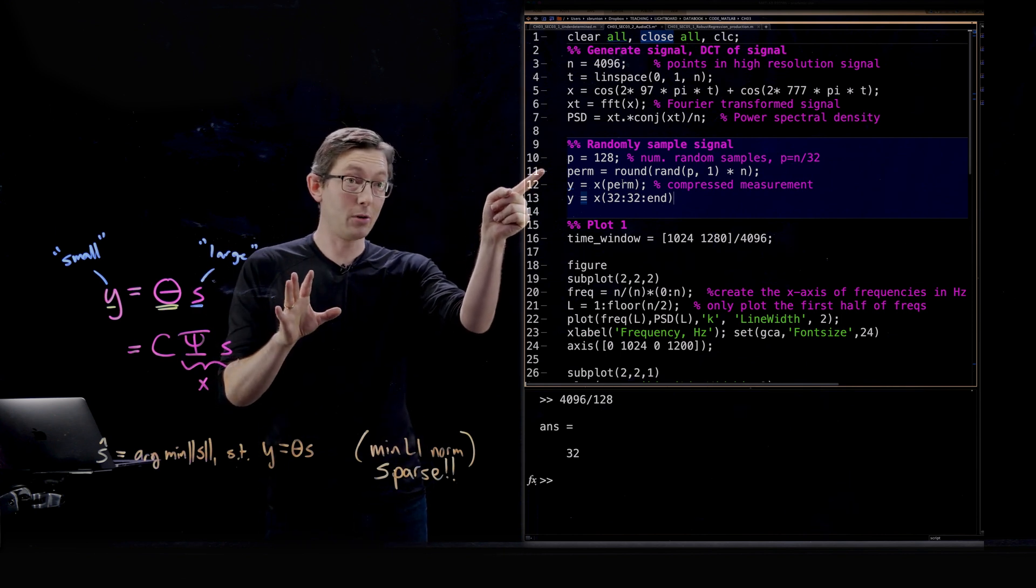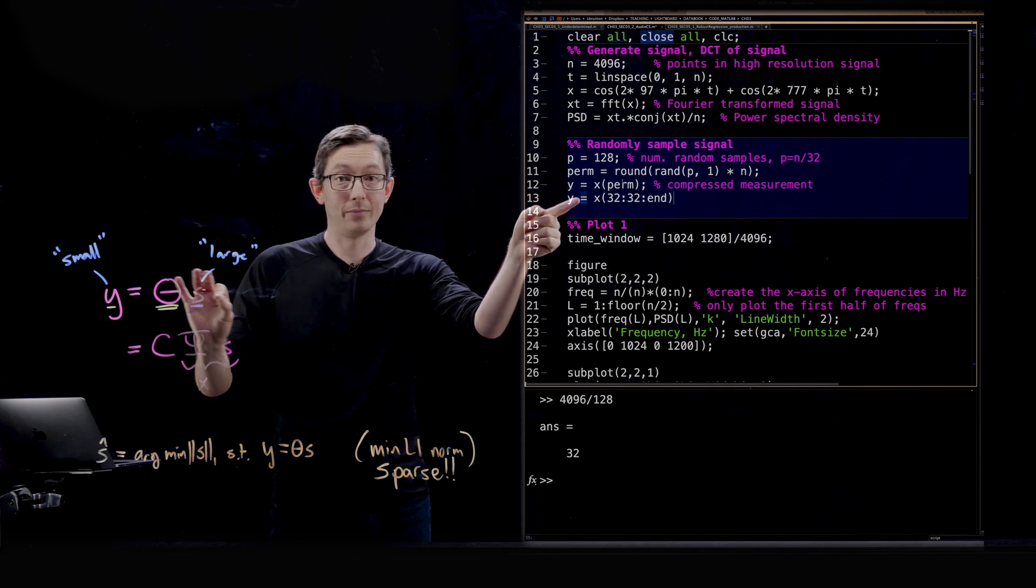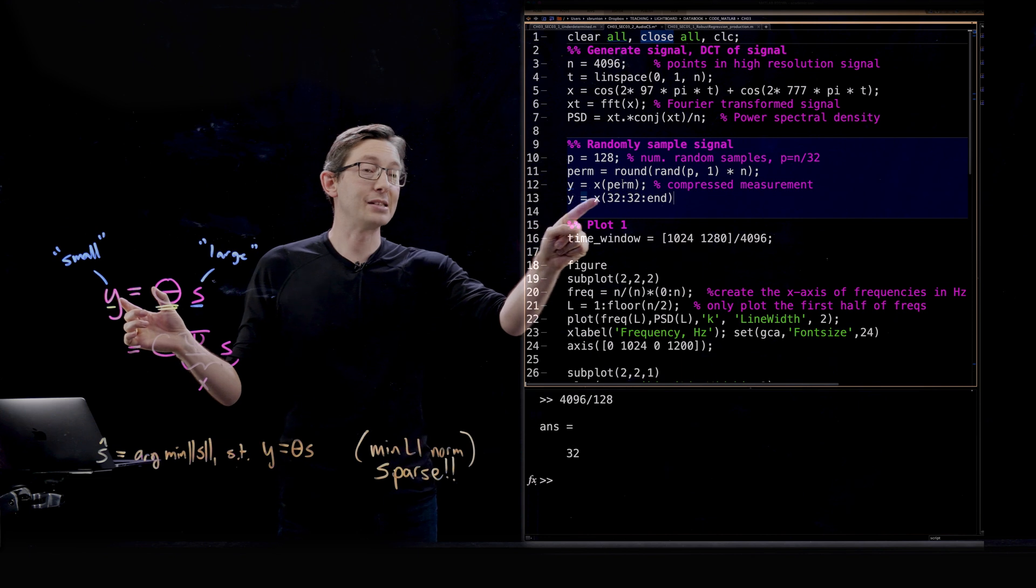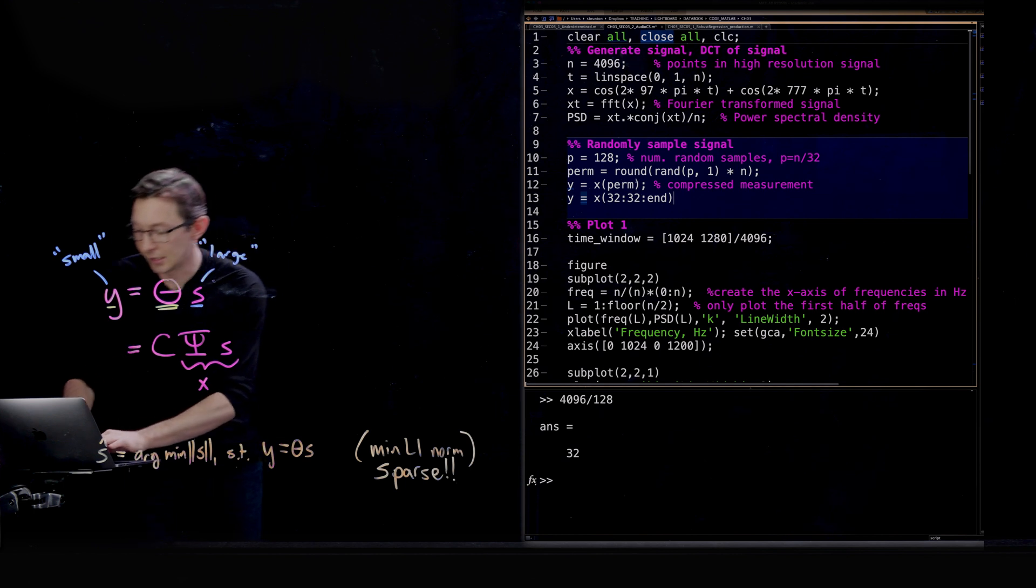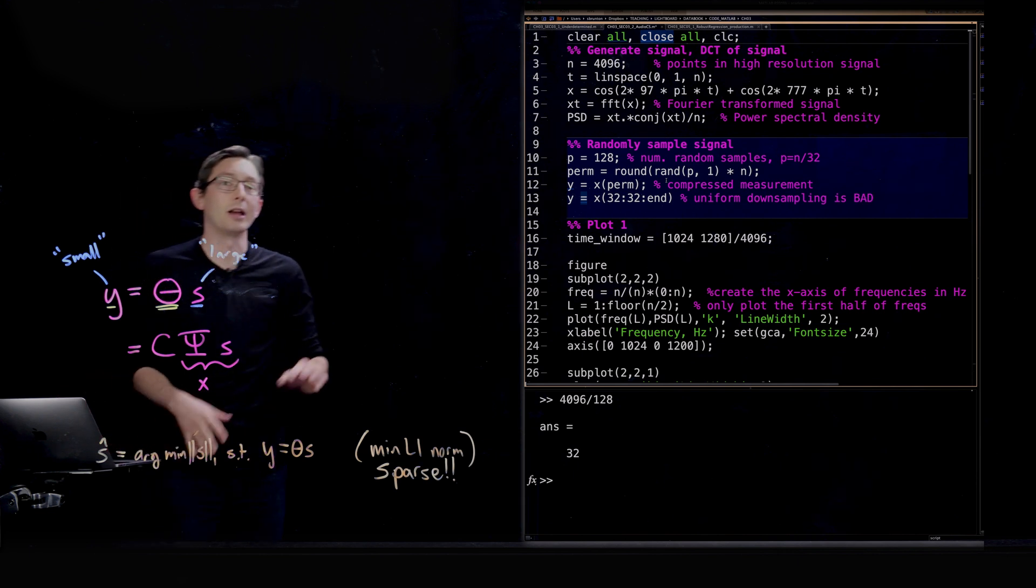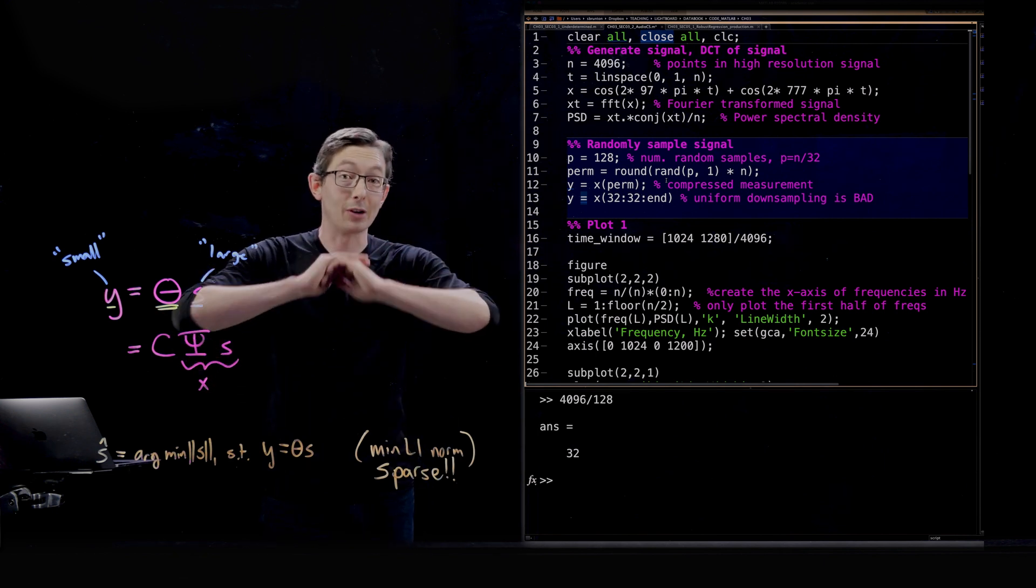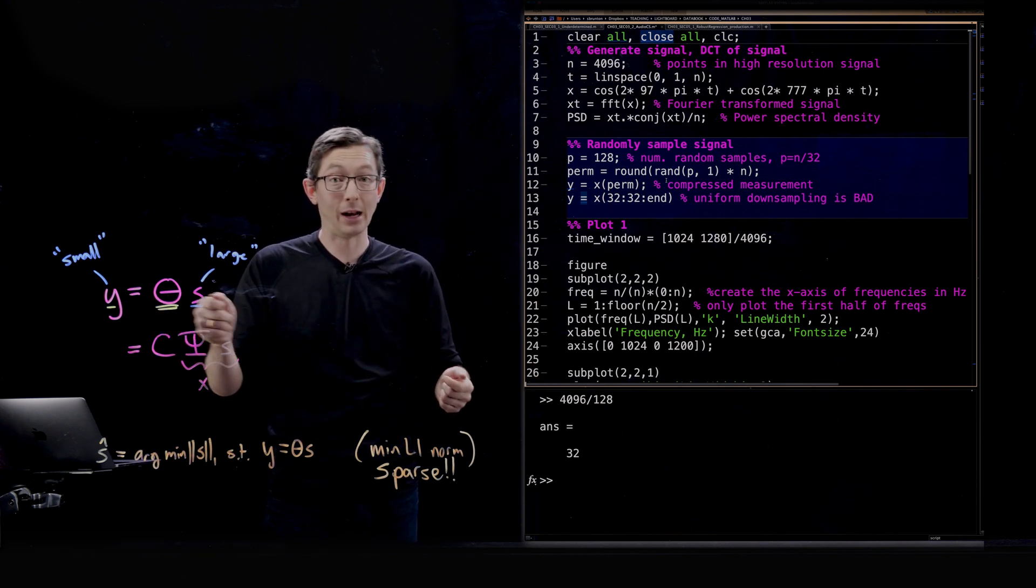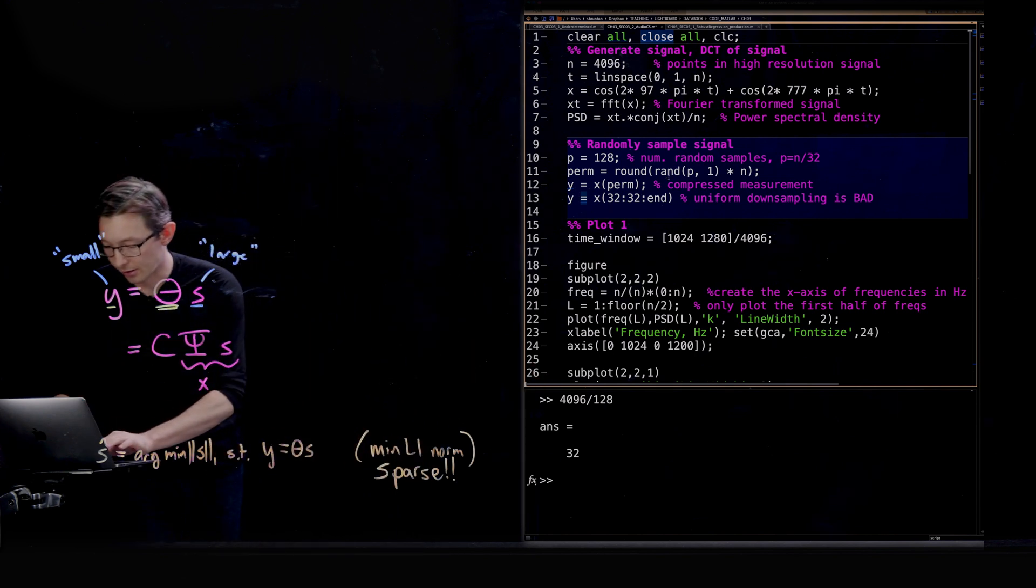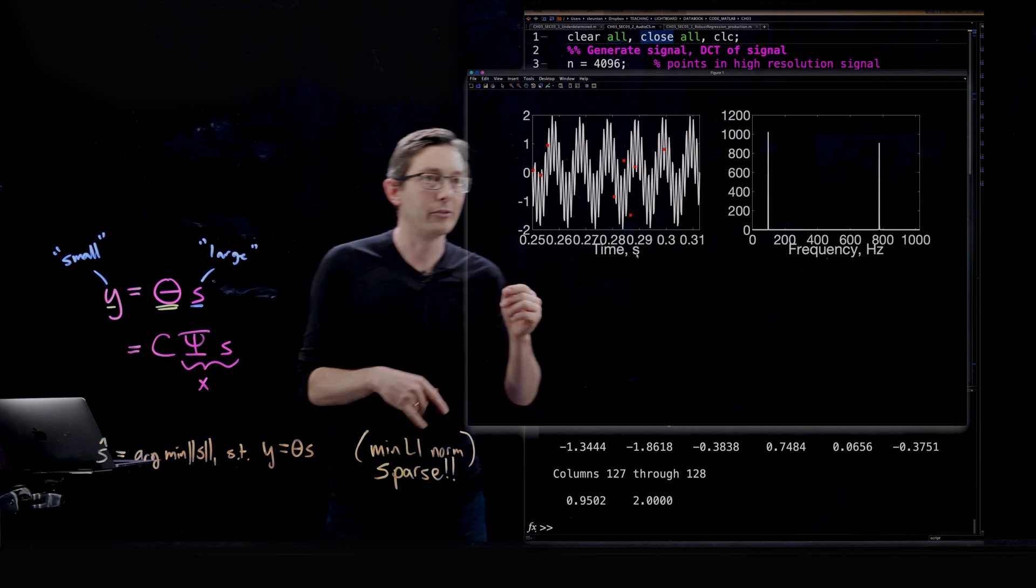What I did before is I randomly sampled in time at a very low rate on average. Here I'm sampling uniformly at a very slow rate. And I'm going to show you that this uniform downsampling is bad. We're not going to be able to solve for the true solution if we uniformly downsample because we will actually throw away information. We will alias our signal and we'll lose all that rich information that we get from randomly sampling.